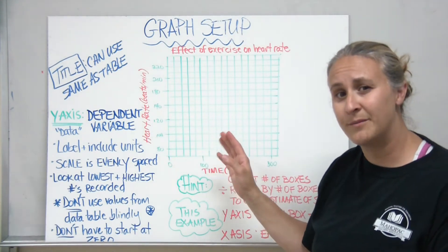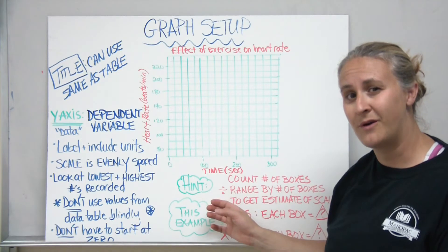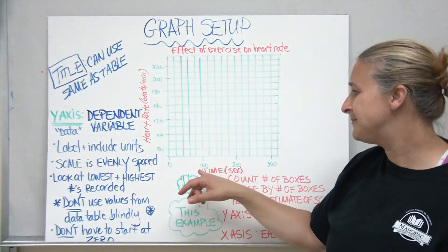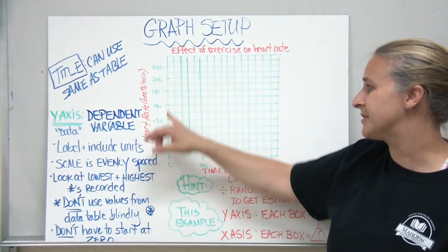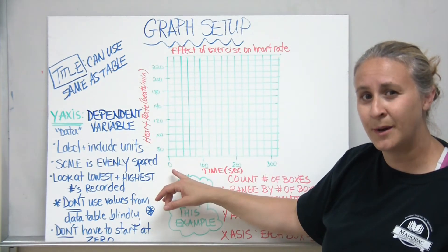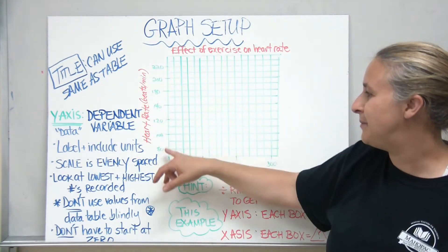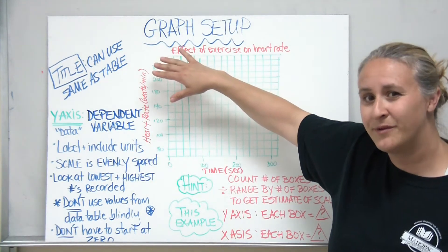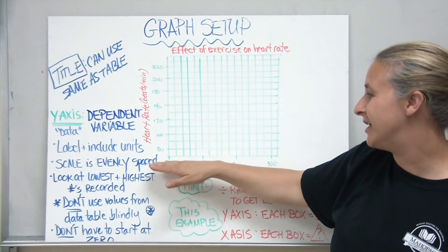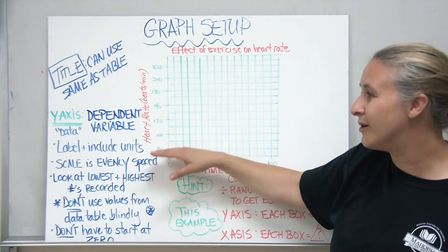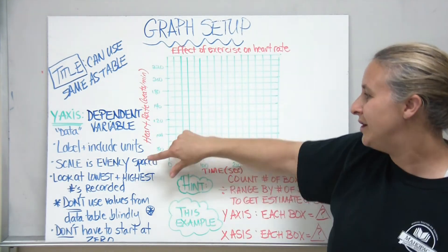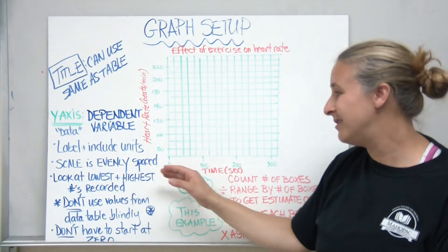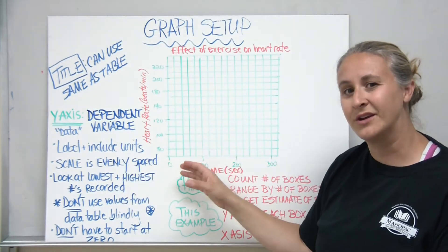I need to decide what's going to go on my y-axis and what's going to go on my x-axis. So my y-axis is going to be the dependent variable. So my y-axis is the one that goes up and down and that's the dependent variable, the data that I'm collecting. So I have to have my data before I can set this graph up so that I know the lowest number that I need to start with and the highest number. Don't forget that you need to label and include units.